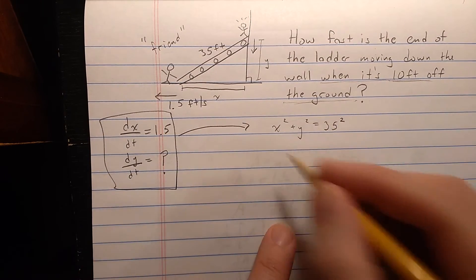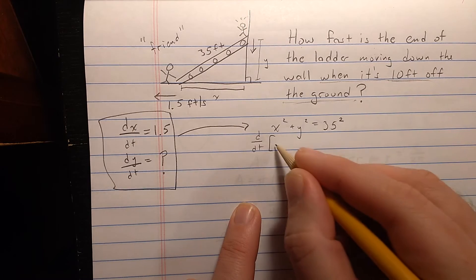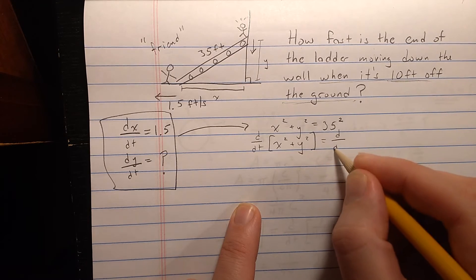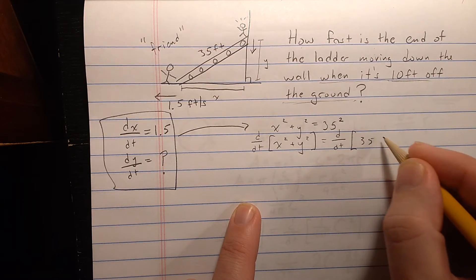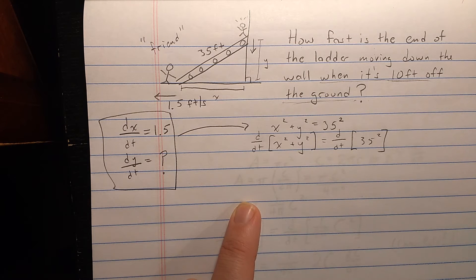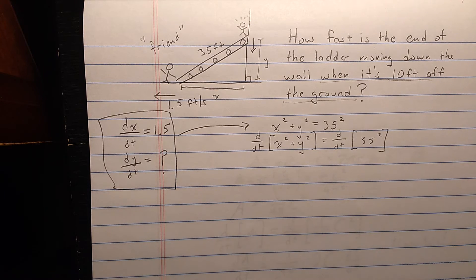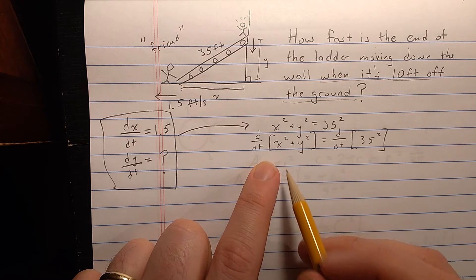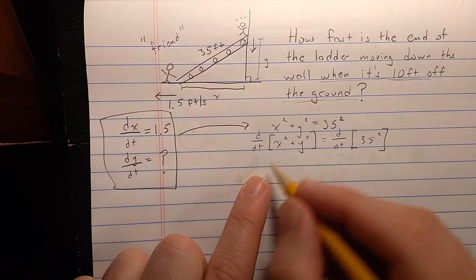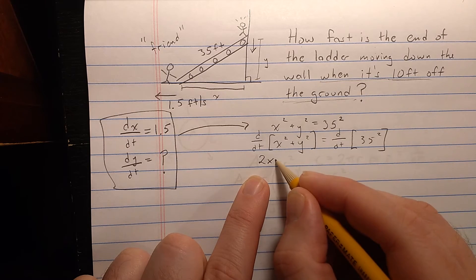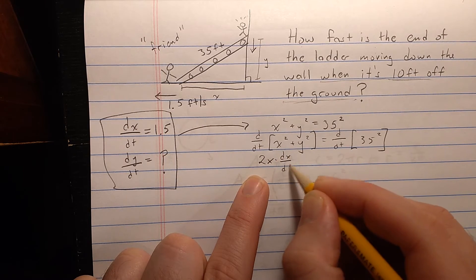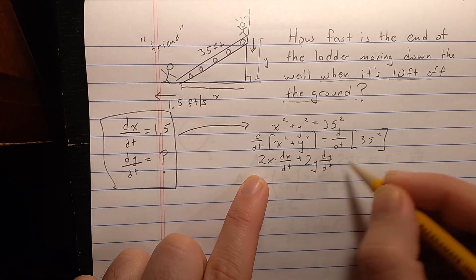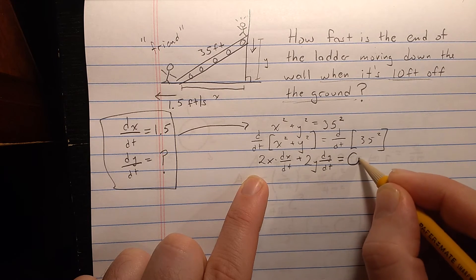In order to get derivatives, I'll take the derivative with respect to time. As in the previous problem, x and y are functions of time which are then squared — a second function is applied — so I take the derivative of the second function and multiply by the derivative of that variable with respect to time, applying the chain rule. On the right-hand side I have a constant, so its derivative is zero.